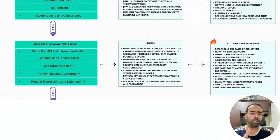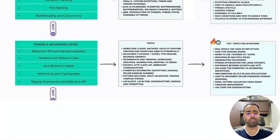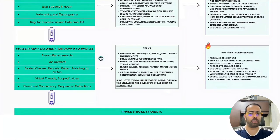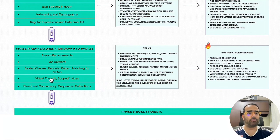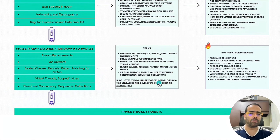If you are preparing for a five-plus years Java interview, focus on these advanced topics. You should also be aware of key features from Java 9 to Java 23 — stream enhancements, the var keyword introduced in Java 10, sealed classes and records, pattern matching for switch, and virtual threads, which is a very hot interview topic for experienced candidates. Structured concurrency and sequenced collections are also important.